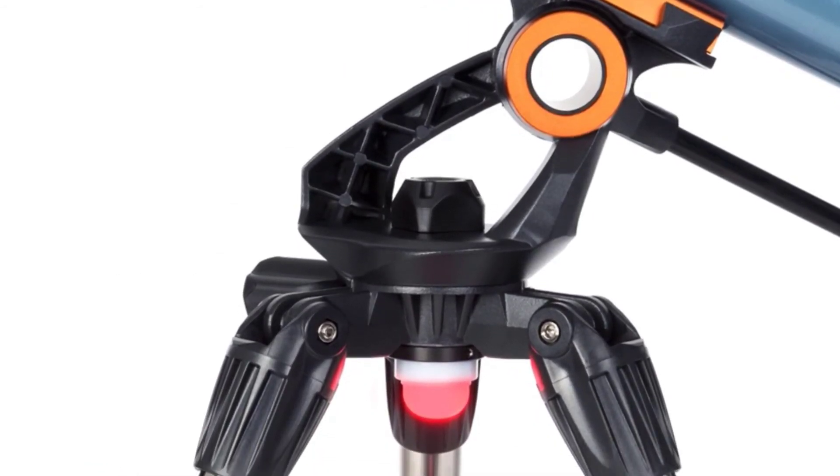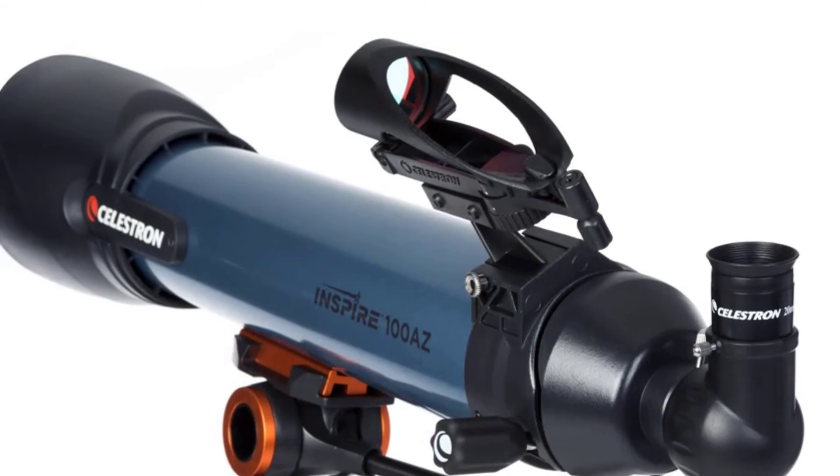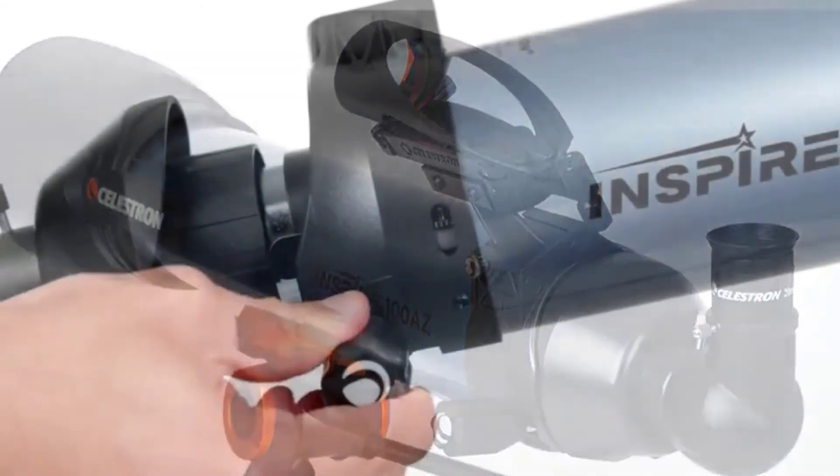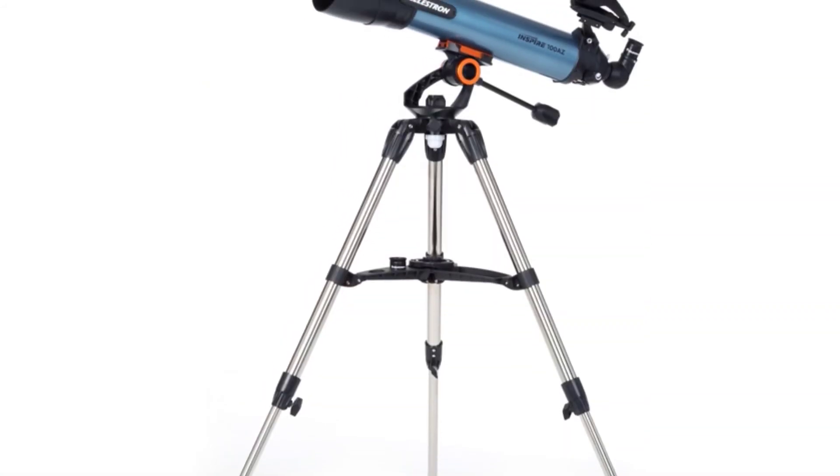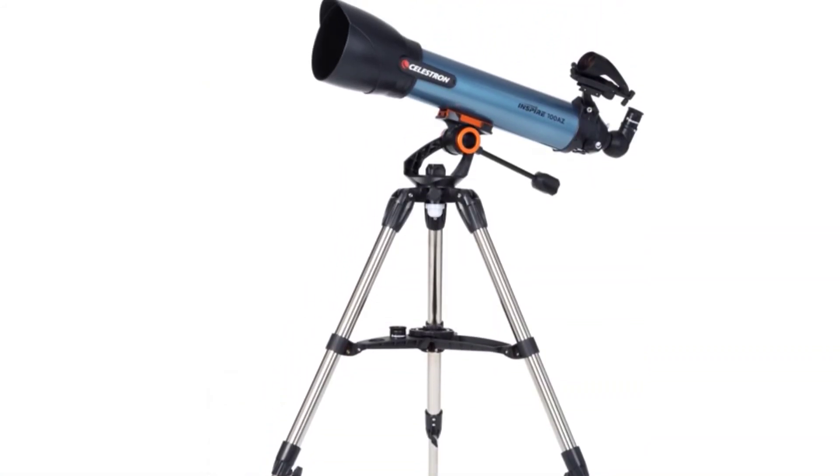Once it is in position, you can use your smartphone to take pictures of the high power images seen through the telescope. This feature alone makes this the best telescope under $300 with some type of camera attachment.